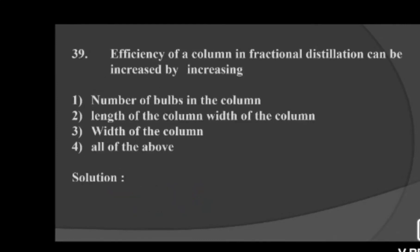Next question: the efficiency of a column in fractional distillation can be increased by increasing — option 1: number of bulbs in the column, option 2: length of the column and width of the column, option 3: width of the column, option 4: all of the above. The efficiency of a column in fractional distillation can be increased by increasing all the above factors — option 4 is correct.